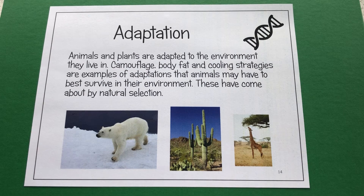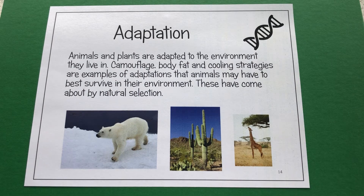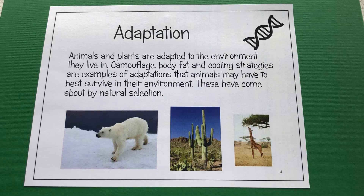Underneath that fur they have a black skin, which is really good at absorbing heat from the Sun. We can also see the cactus — its leaves are actually those small spines, which are really good at stopping animals from eating them.